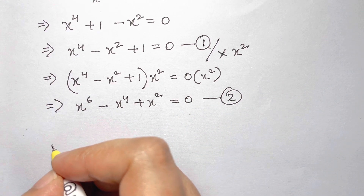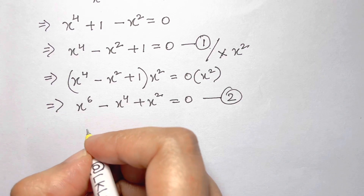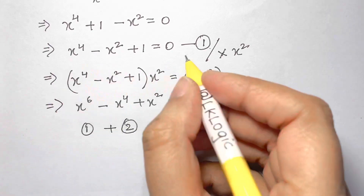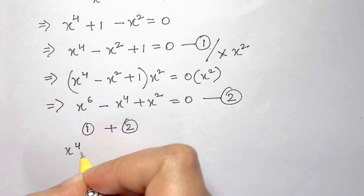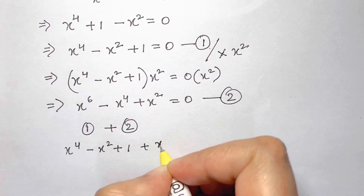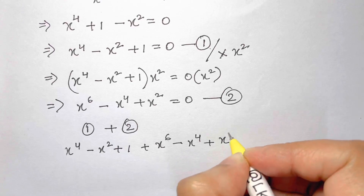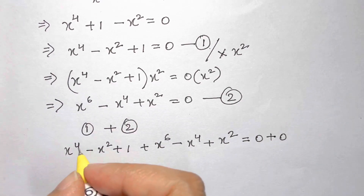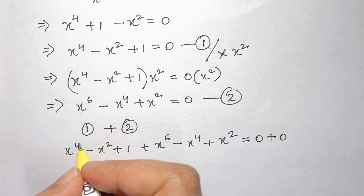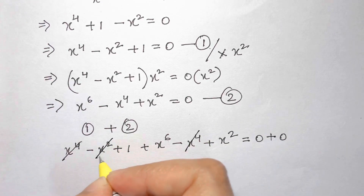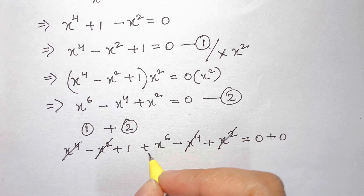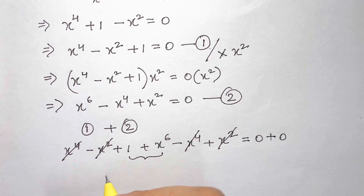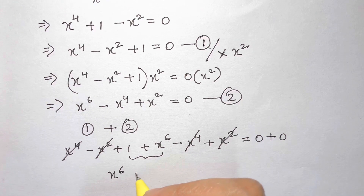Adding equations 1 and 2: (x⁴ - x² + 1) + (x⁶ - x⁴ + x²) = 0. The x⁴ and -x⁴ cancel, and -x² and +x² cancel, leaving x⁶ + 1 = 0.